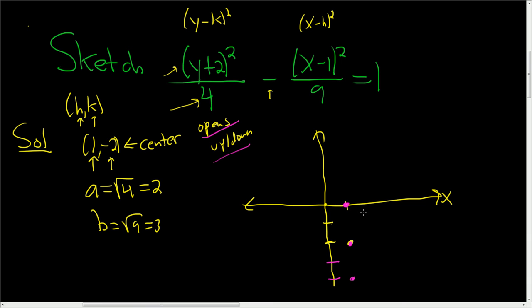And then we'll go left and right by 3. So 1, 2, 3. There we are. And then 1, 2, 3. There we are. Then we draw a box. This box has a really cool name. It's called the fundamental rectangle.